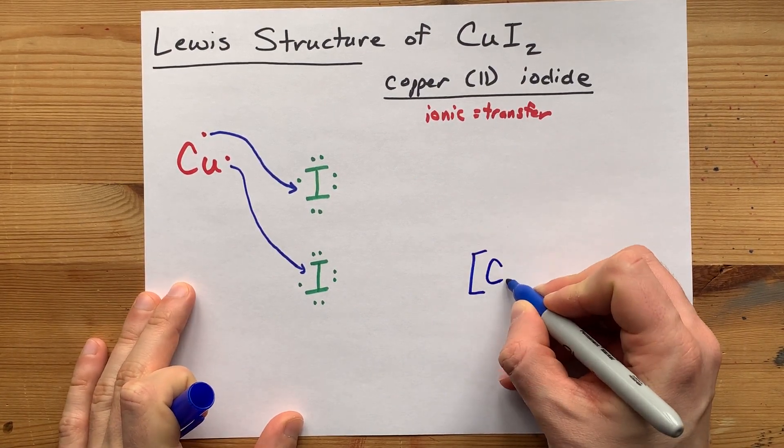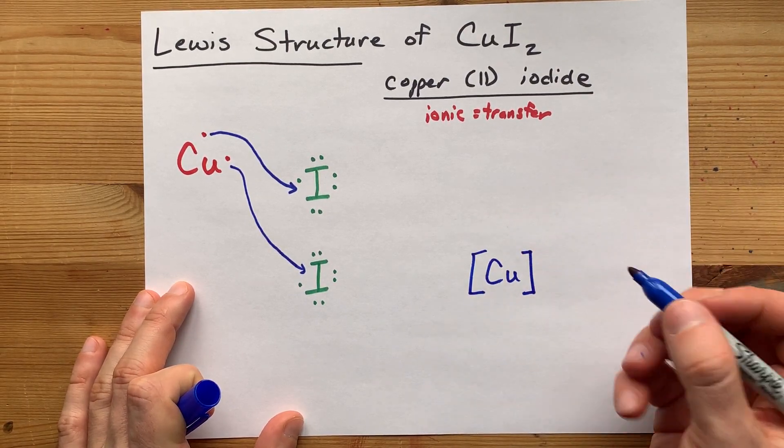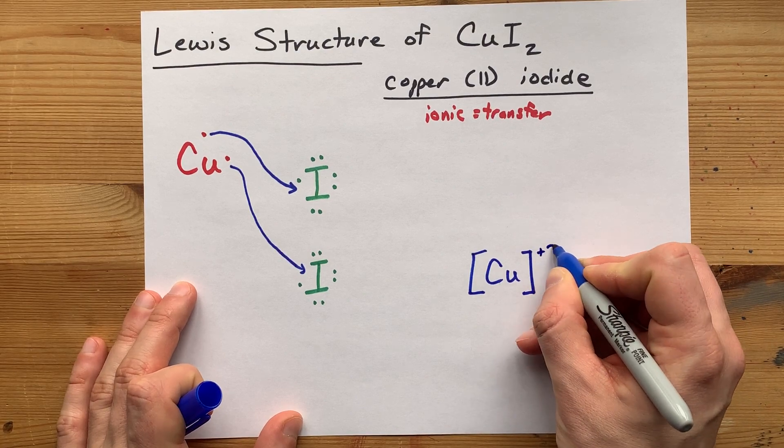The completed Lewis structure here has copper with no electrons around it because it gave away its valence electrons and a charge of +2.